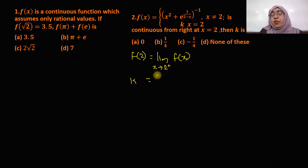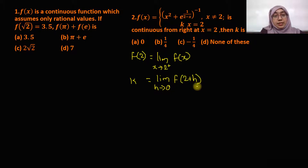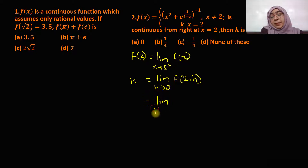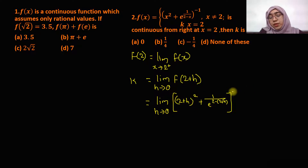Limit extending to 2 plus of f of x can also be written as limit extending to 0 of f of 2 plus h. Similarly, limit extending to 2 minus is limit extending to 0 of f of 2 minus h. The function becomes: limit of (2 plus h) whole squared plus 1, upon e raised to 2 minus (2 plus h), the whole raised to minus 1.